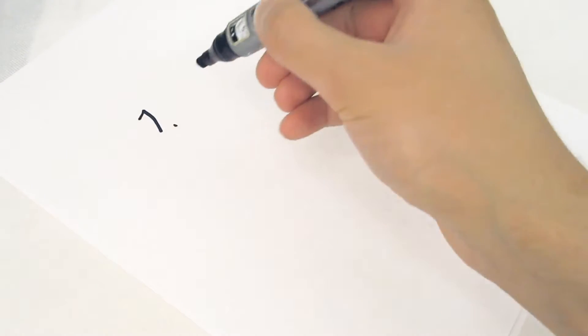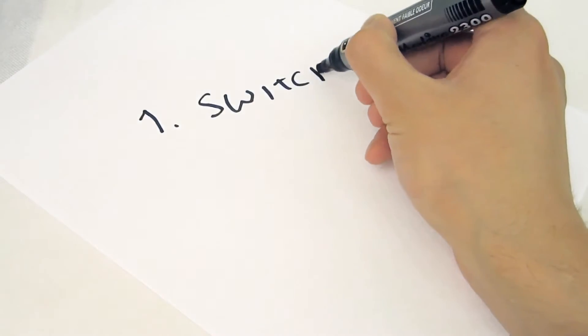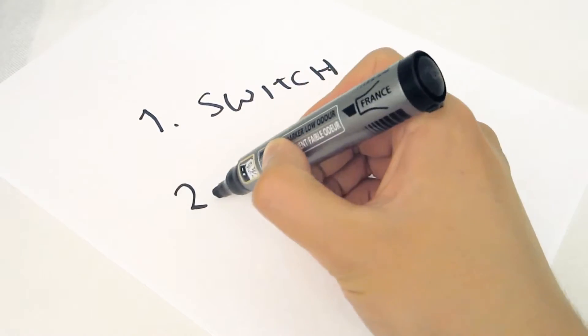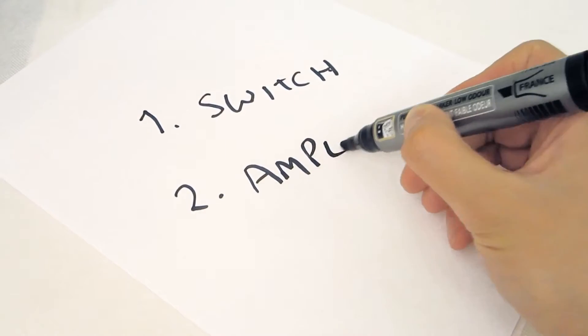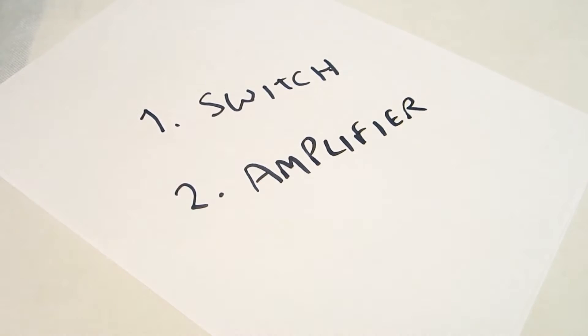Transistors can be used in one of two basic ways. The first way is as a switch. They can switch a current or component on and off. And the second is as an amplifier. They can take an input signal and make it much larger.